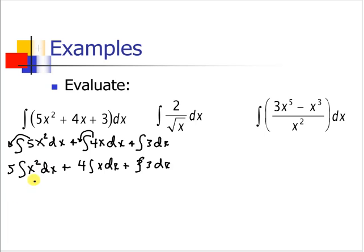We can use, for this part, the first rule, so we're going to add 1 to the exponent and divide by the new exponent. Here we can use our second rule. So we have our first rule: we're going to add 1 to the exponent and divide by the new exponent. And we use our second rule, the integral of a constant.